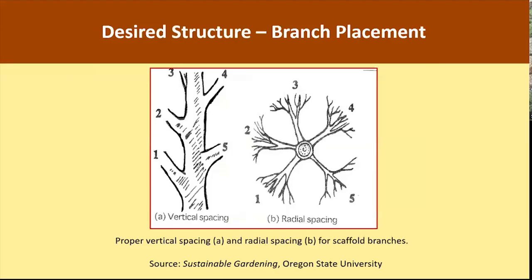Before pruning for structure, we should consider the criteria that define good, strong structure. Our first criterion is branch placement. The ideal pattern when viewed from the side is branches spaced anywhere from 8 to 24 inches apart, measured by the point of attachment to the main trunk. When viewed from the top down, branches should be distributed like spokes of a wheel radiating from the center.